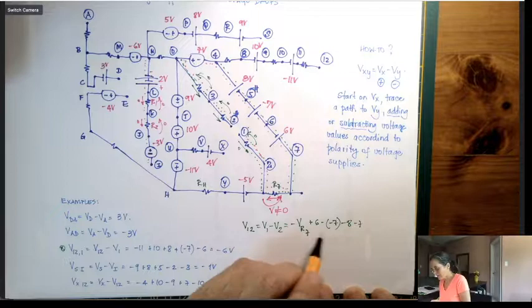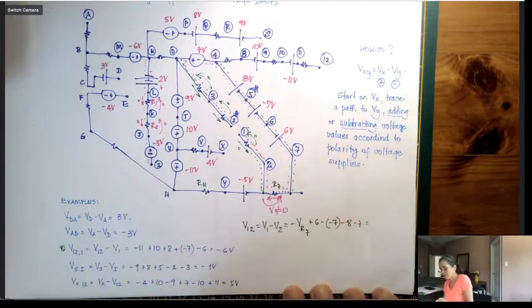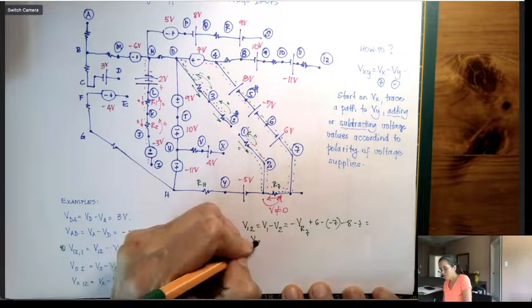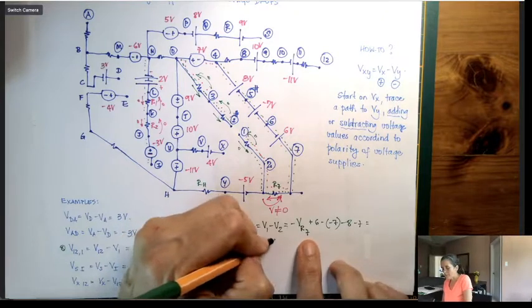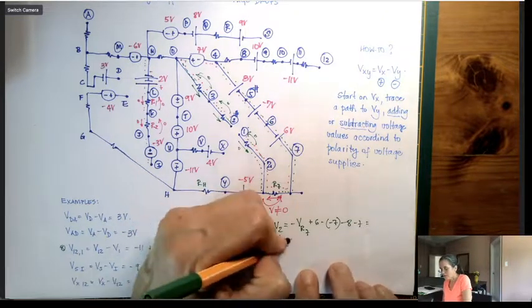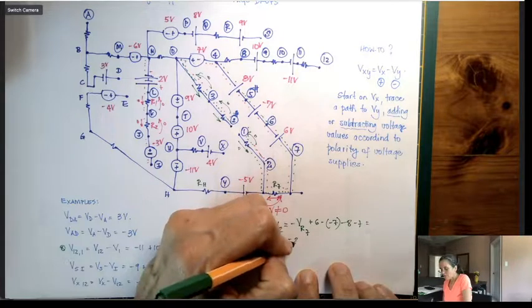7 minus 7. 6 minus 8. So what happens here, it's going to be V1-2 will be minus Vr7 minus 2 volts.